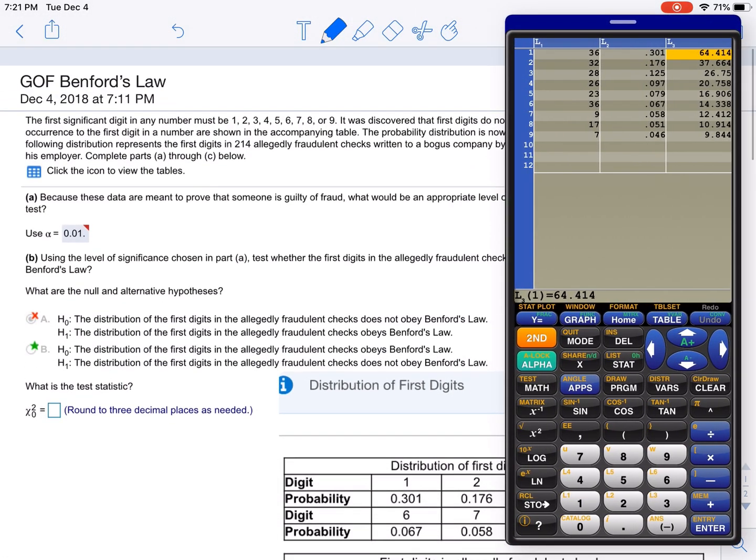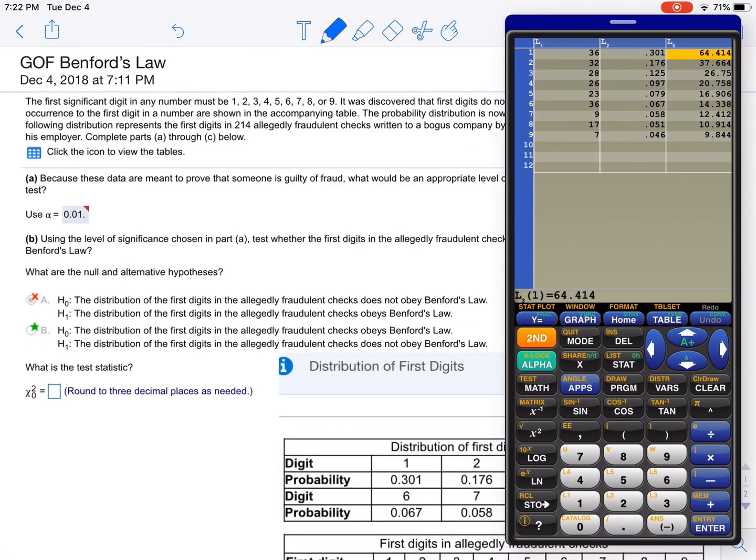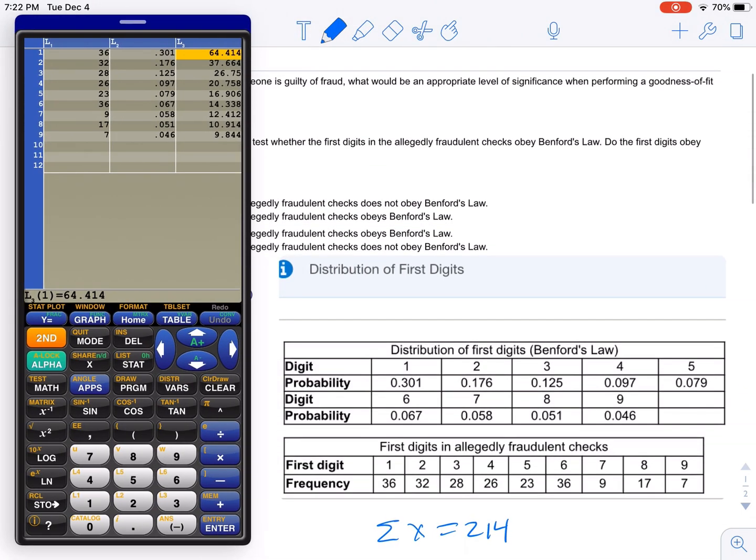I added those up because I didn't realize that it gave us 214 somewhere - right here. So we already know that the sum of L1 is 214. We have the distribution; what we need is the expected values.